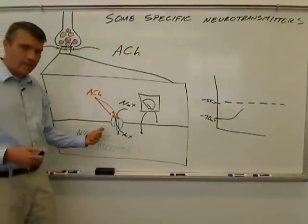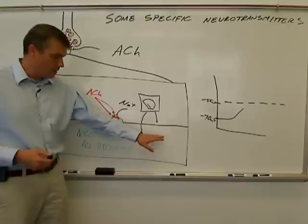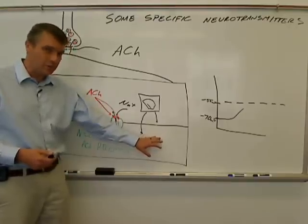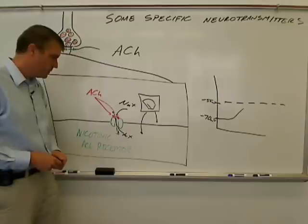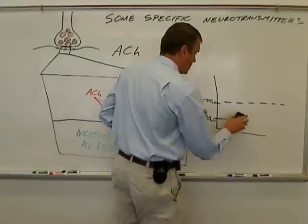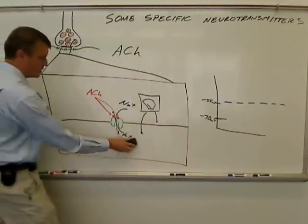That's the nicotinic acetylcholine receptor. It's always excitatory. It's going to cause this cell to approach threshold and possibly cause an action potential or activation of this cell. So that's the nicotinic receptor. I'm going to erase this because I'm going to use that again. I'm going to erase the nicotinic receptor.